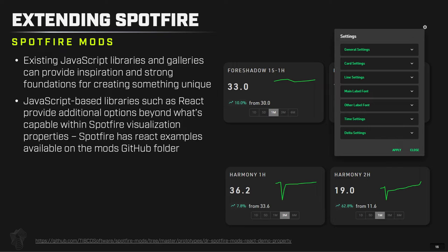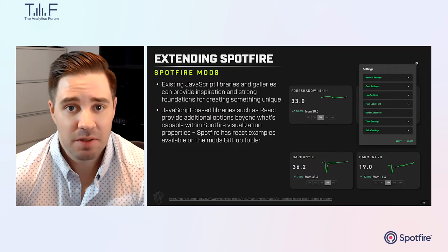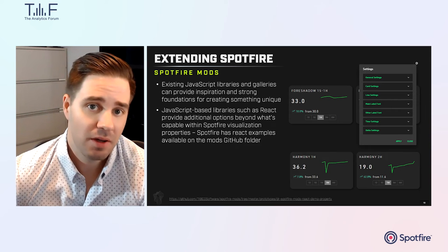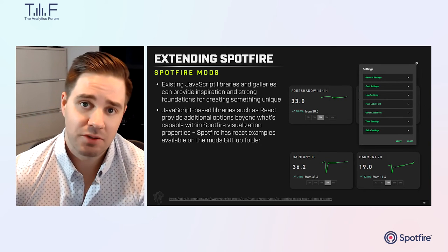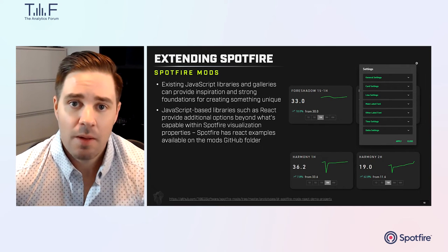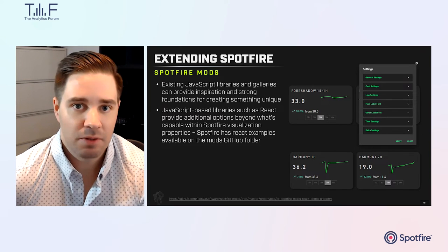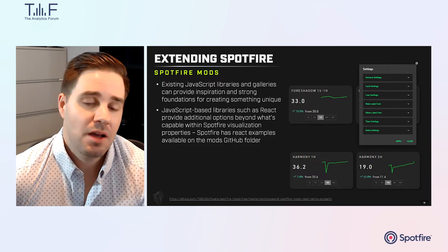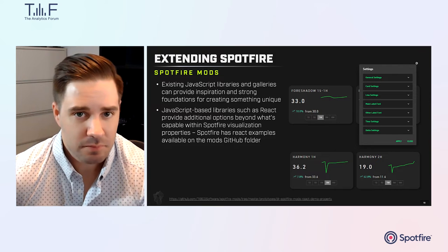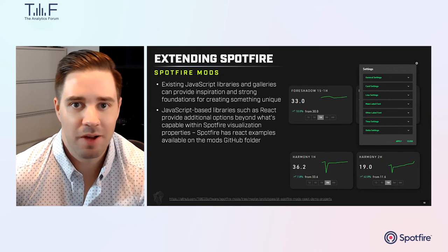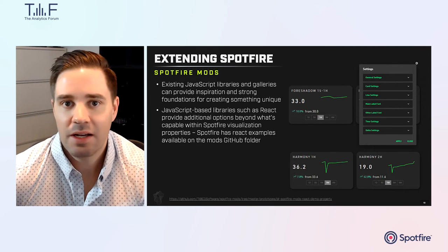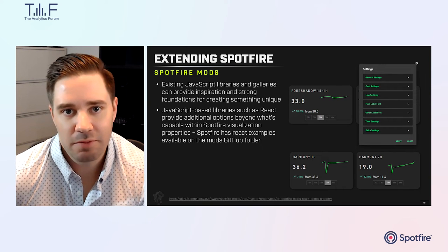We ended up building the dash card and adding React library components to provide users with tons of customization: label fonts, minor label fonts, time settings, sparkline colors, solid versus gradient color options — all possible through the React library. Spotfire has React libraries available on the Mods GitHub page, with a demo properties repo where you can build something similar. JavaScript provides almost endless customizations, and you can generally find any kind of visualization example that's easy to bring into Spotfire in a unique and customized way.